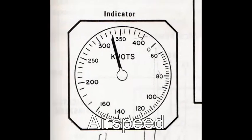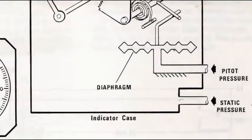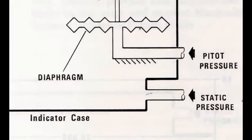Let's move on to the airspeed indicator. Unlike the altimeter, the airspeed indicator diaphragm has two inputs.